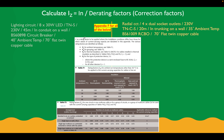C is a rating factor to be applied where the installation conditions differ from those for which values of current carrying capacity are tabulated in this appendix. In simple terms, the current carrying capacity tables inside the on-site guide or BS 7671 are based on cables tested at certain conditions. If the ambient temperature is larger, if they're grouped, if it's in insulation, or if it's a different type of fuse, this all affects the current carrying capacity of the cable.